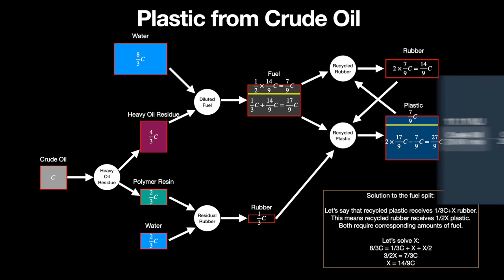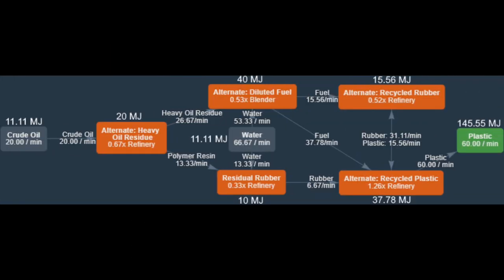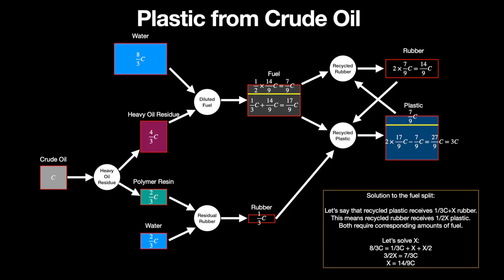If we compare these graphs with those on the Satisfactory Wiki, we can see that they are indeed the same. The graphs on the Wiki are calculated with a production target of 60 per minute, which means that they start with 20 crude oil. This, and the fractions of 9 in the formulas, cause the steps in the middle to show quite nasty numbers in the decimal format. Hopefully the formulas in fraction format in this video are a bit more easy to understand.